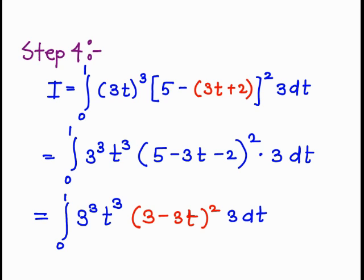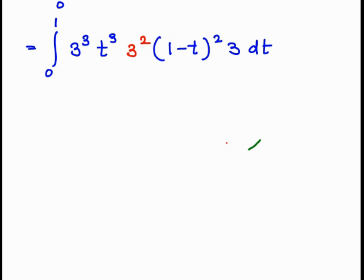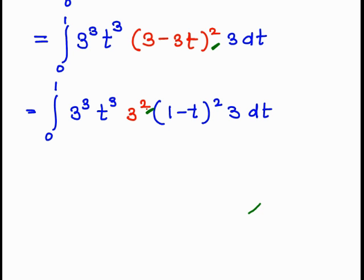After simplification: 3 raised to 3 times t raised to 3, and (5 minus 2 minus 3t) equals (3 minus 3t) raised to 2. Taking 3 common from the bracket, since the power of the bracket is 2, that gives 3 raised to 2 outside, times 3 dt.